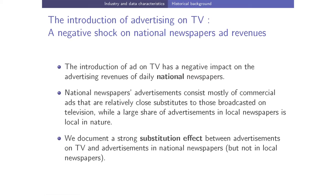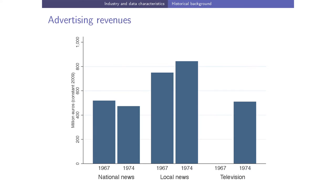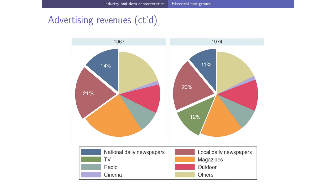This introduction of TV advertising was a negative shock on the advertising revenues of national daily newspapers, whose advertisements consist mostly of national ads, while local newspapers relied mostly on local ads. We document a strong substitution effect: national newspaper advertising revenues decreased while TV revenues grew from zero. In terms of share of total French advertising revenues, national newspapers went from 14% in 1967 to 11% in 1974, while TV reached 12% in 1974 — and magazines were similarly affected since they also rely heavily on national ads.